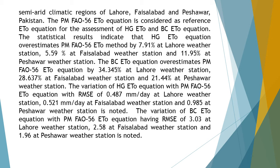The variation of the HG ETo equation with the PM FAO-56 ETo equation, measured by RMSE, is 0.487 mm/day at Lahore weather station, 0.521 mm/day at Faisalabad weather station, and 0.985 at Peshawar weather station. The variation of the BC ETo equation with the PM FAO-56 ETo equation, having RMSE of 3.03 at Lahore weather station, 2.58 at Faisalabad weather station, and 1.96 at Peshawar weather station, is noted.